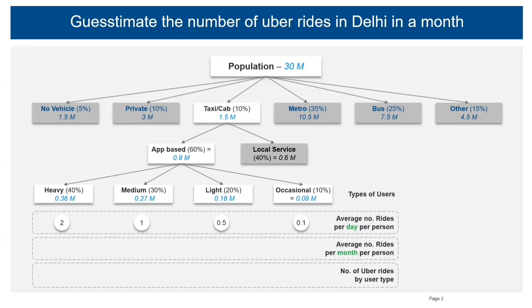To find the average number of rides per month per person, I'll multiply these figures by 30, giving 60, 30, 15, and 10 rides respectively per person per month.